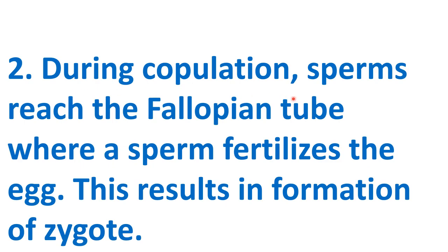During copulation, sperms reach the fallopian tube where sperm fertilizes the egg. Sperm reaches the fallopian tube because sperm has a tail and they are motile. This results in formation of a zygote — a single cell made by fusion of ovum and sperm.